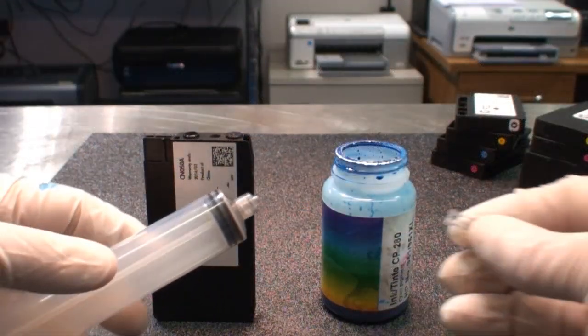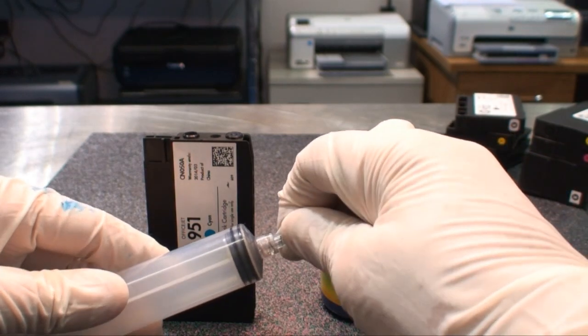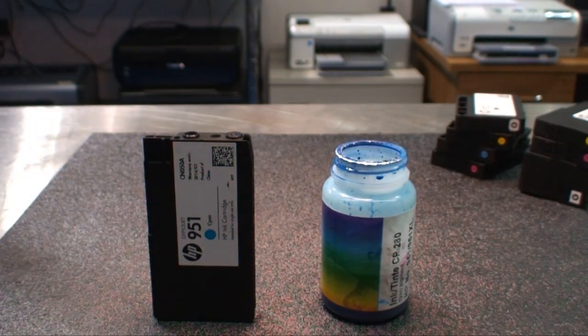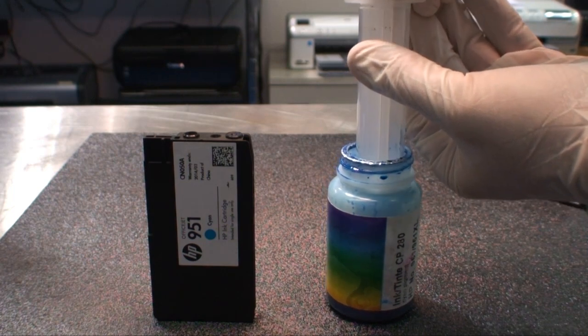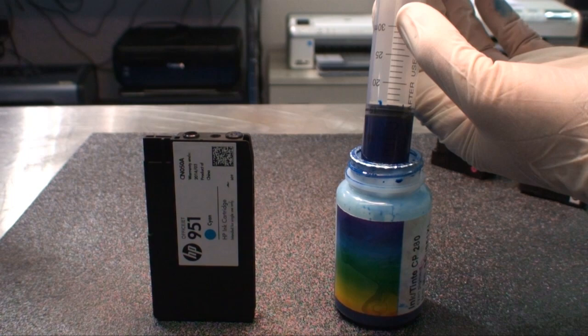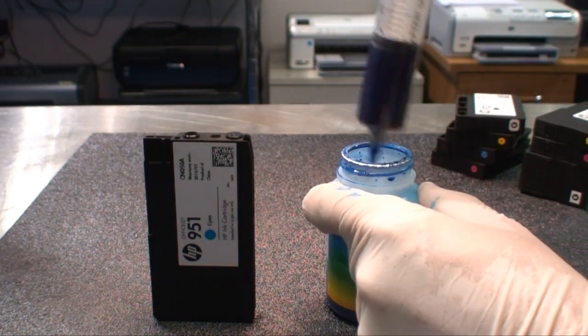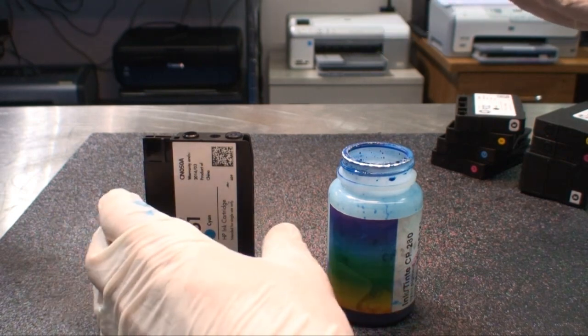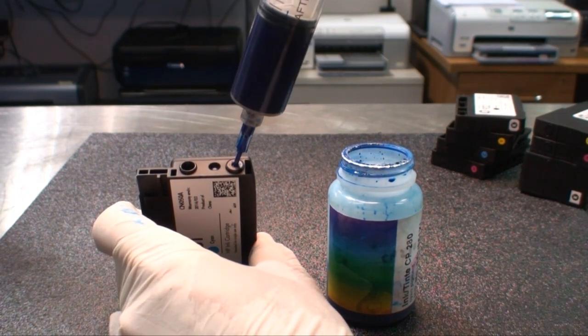Next, connect the canola needle to the 20 milliliter syringe. Now fill the syringe with the designated amount of ink for the cartridge you were filling. Make sure the exit port of the cartridge is facing up as shown. Insert the needle into the exit port of the cartridge at a slight angle as shown here, and inject the cartridge with ink.